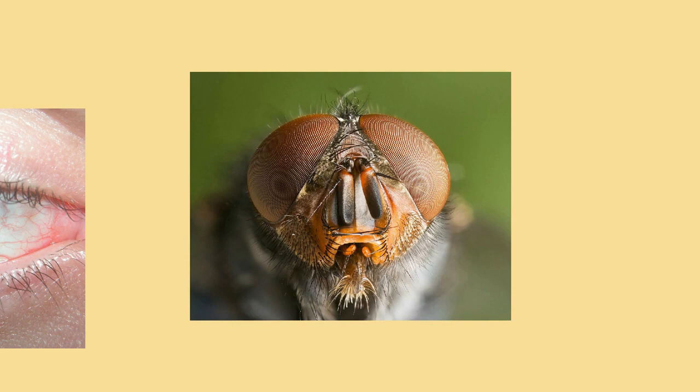There is at least one vertebrate, the spookfish, whose eyes include reflective optics for focusing of light. Each of the two eyes of a spookfish collects light from both above and below; the light coming from above is focused by a lens, while that coming from below is focused by a curved mirror composed of many layers of small, reflective plates made of guanine crystals.